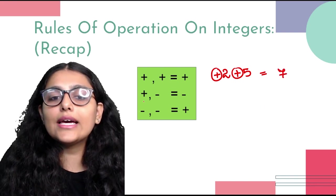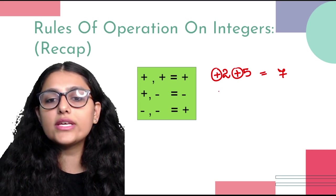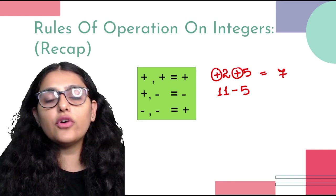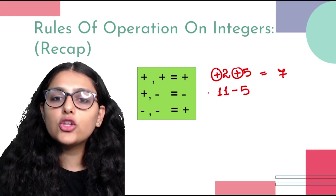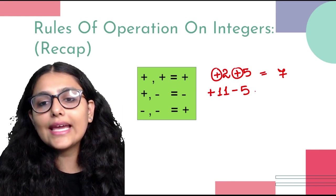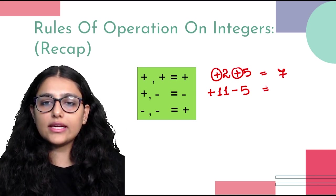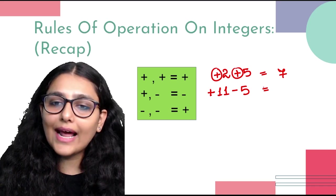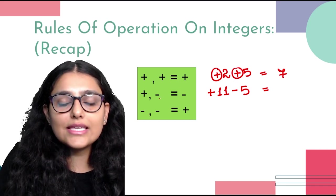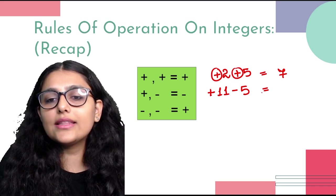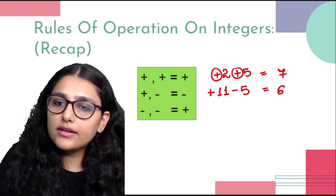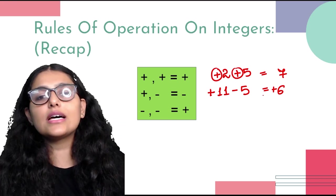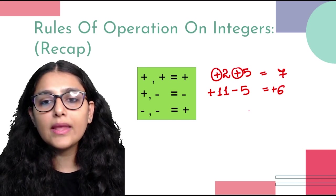On the other hand, if one number is positive and one is negative — for example, 11 and minus 5 — one positive sign, one negative sign, so the operation is subtraction. 11 minus 5 is equal to 6. The sign of the answer follows the sign of the larger number, so the answer is positive 6.